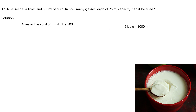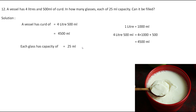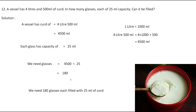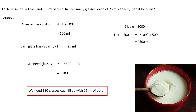We know that 1 liter equals 1,000 milliliters, so 4 liters 500 milliliters becomes 4 × 1,000 + 500 = 4,500 milliliters. Each glass has a capacity of 25 ml. To find how many glasses we need, we divide 4,500 by 25, which gives 180. So the final answer is 180 glasses, each filled with 25 ml of cold drink.